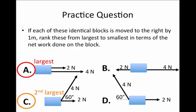The second largest would be case C because in this case both the four newton force and the two newton force are in some sense directed to the right but the four newton force is at a 60 degree angle relative to the two newton force and relative to the overall displacement vector which is exactly to the right. So, in this case this is not quite as large as A.